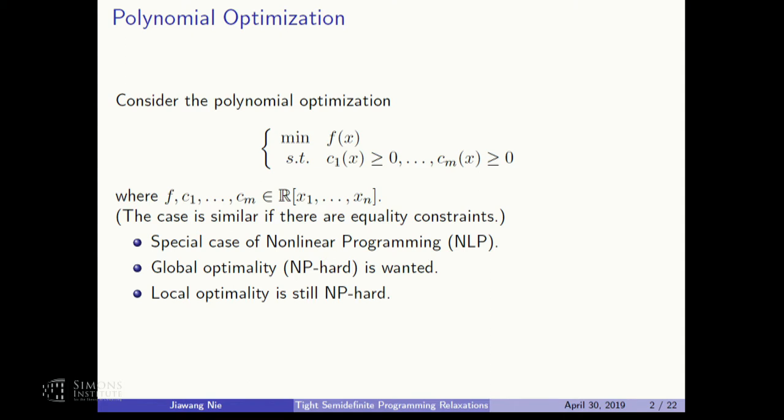I'd like to mention that for polynomial optimization — also for nonlinear programming — finding even the local minimizer is still hard. In many conferences, people get excited when they say they found the local minimizer, though it looks like it's solved. But that is not true. To find the local minimizer, in practice it may be easier, but theoretically it's still difficult.